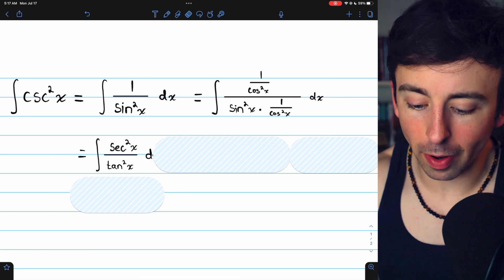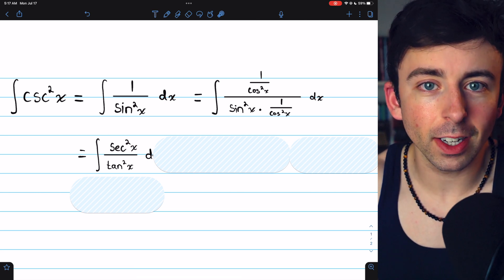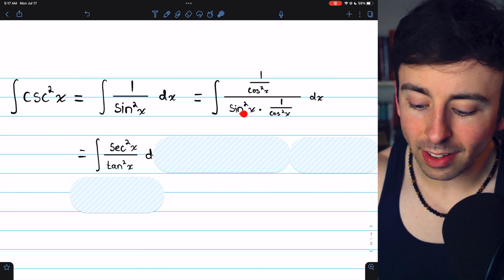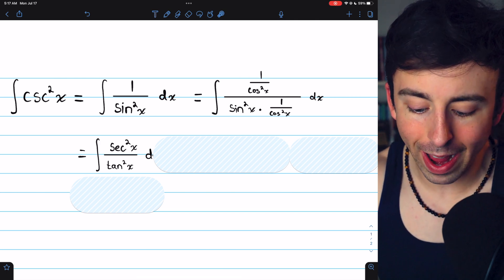In this case, the numerator, 1 over cosine squared, is secant squared, by definition. In the denominator, sine squared times 1 over cosine squared is just tangent squared.